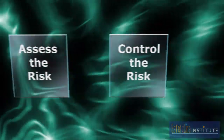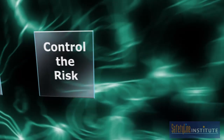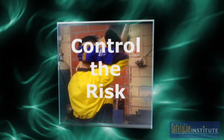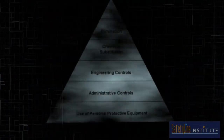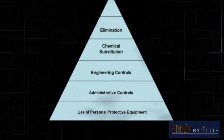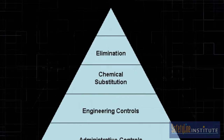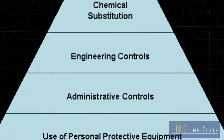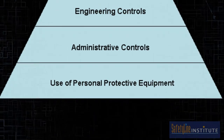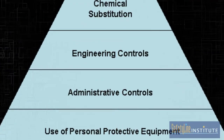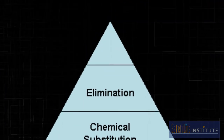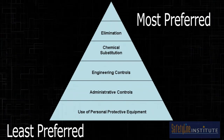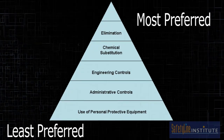If the risk assessment determines the risk is significant and not adequately controlled, risk control measures must be introduced. The hierarchy of controls is used to select the most effective controls or combination of controls — ordered from most to least effective. It is important to consider introducing the higher level and more effective measures first, instead of relying on just personal protective equipment and safe work practices, which can more easily fail.